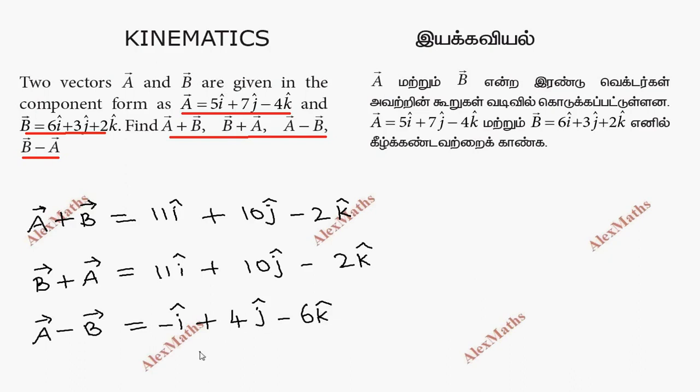If I do the question B vector minus A vector, I get the opposite. So minus i becomes plus i, giving i cap. Minus 4j cap. And minus 6k cap becomes plus 6k cap. Thank you.